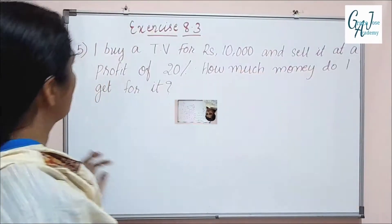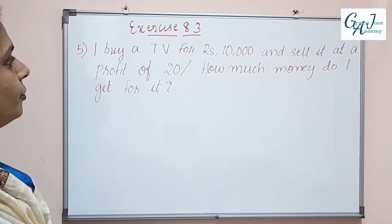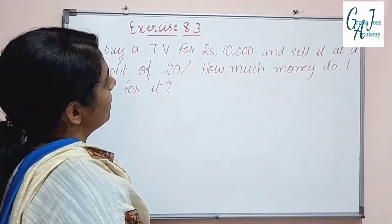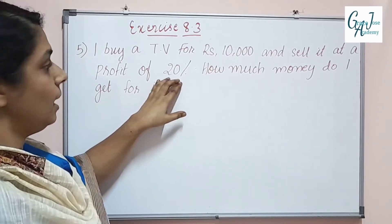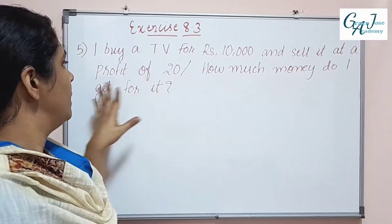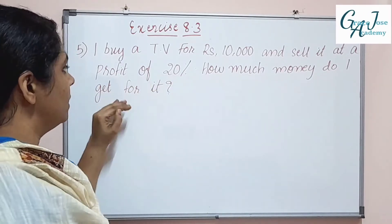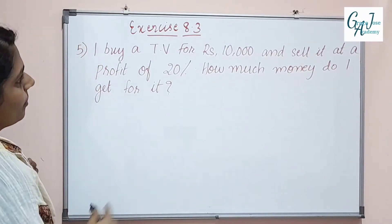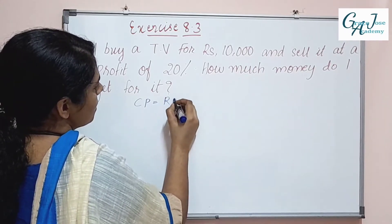Now the fifth question. I buy a TV for Rs. 10,000 and sell it at a profit of 20%. How much money do I get for it? CP is equal to Rs. 10,000.